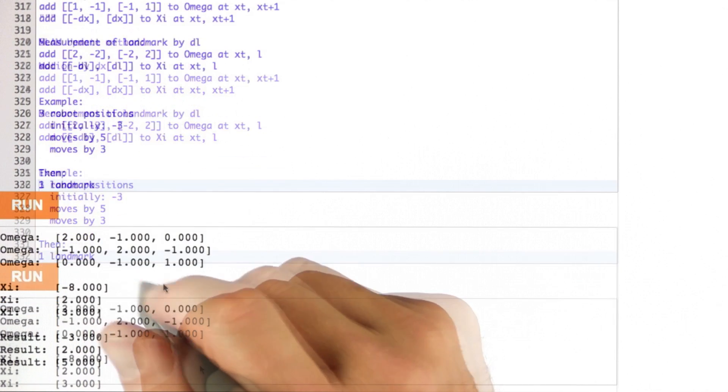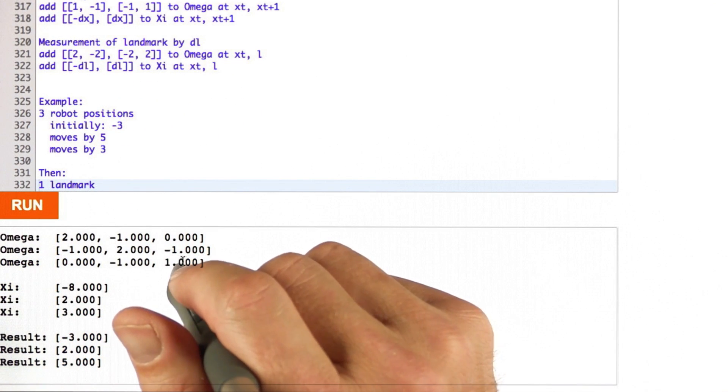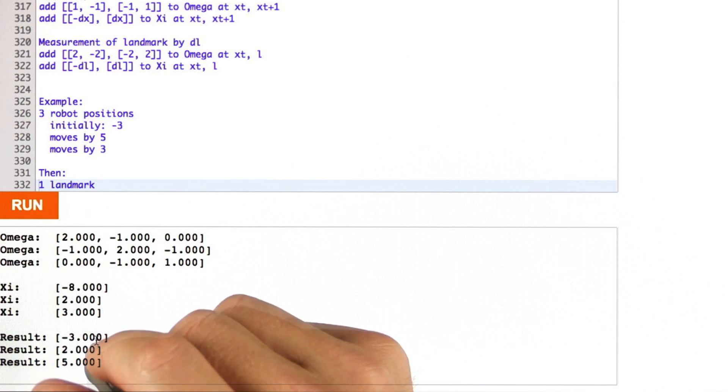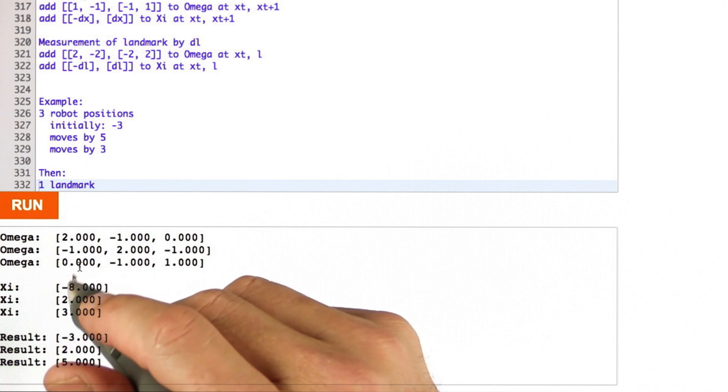And if I run it, I construct an omega matrix piece by piece. That's the one that you should come out with. A xi vector, and then I run and print out using the show command the result of omega to the minus 1 times xi. And you can see minus 3, 2, and 5 are the correct result, the result from the omega matrix and the xi vector.